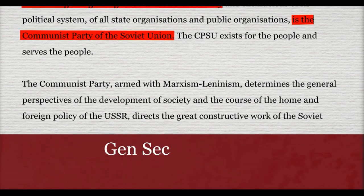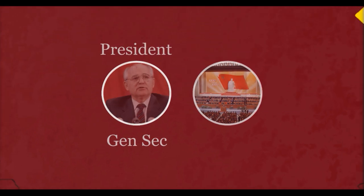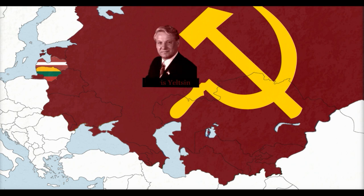Pressure was put on President Gorbachev to repeal Article 6 and allow multi-party elections. At the same time, the republics were given the opportunity to elect their own individual leaders, known as the chairman of Supreme Soviets. The new leaders of Lithuania and Latvia declared independence from the Soviet Union in March and May respectively, which the Soviet Union refused to recognise. Anti-communist and independence-seeking nationalist Boris Yeltsin was elected in Russia. In July, Gorbachev repealed Article 6, ending the Communist Party's monopoly on power, which allowed Yeltsin to resign from the Communist Party and still remain chairman of the Russian Supreme Soviet.